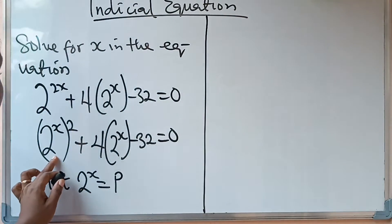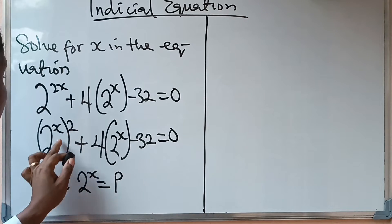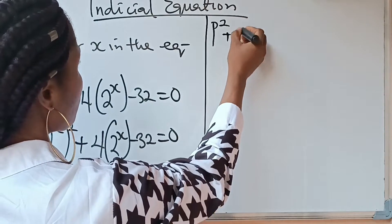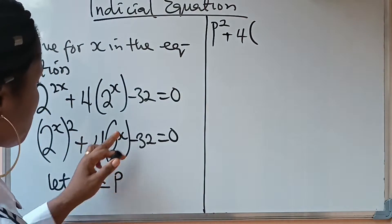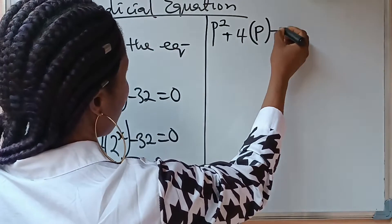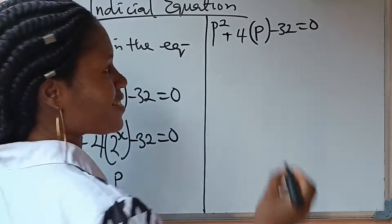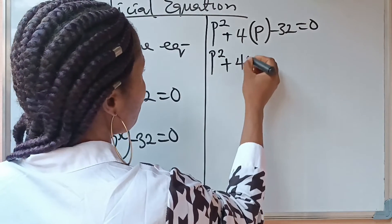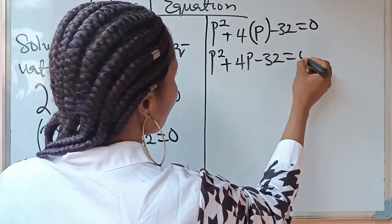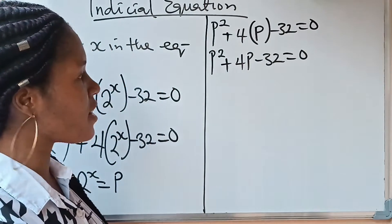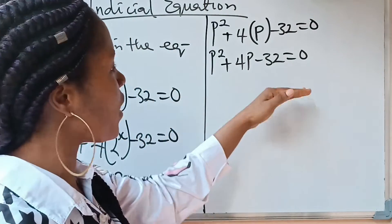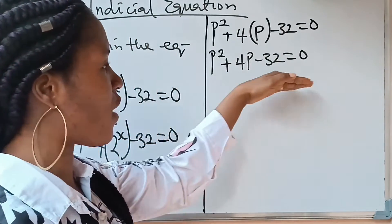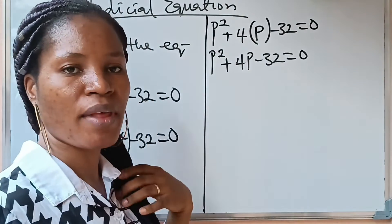So instead of writing 2 raised to the power of x raised to the power of 2, I will write p raised to the power of 2. So p squared plus 4 brackets — this 2 raised to the power of x, I will replace with p — minus 32 is equal to 0. This gives us p squared plus 4p minus 32 equals 0. We have succeeded in reducing this to a quadratic equation, and we now go ahead to solve it.